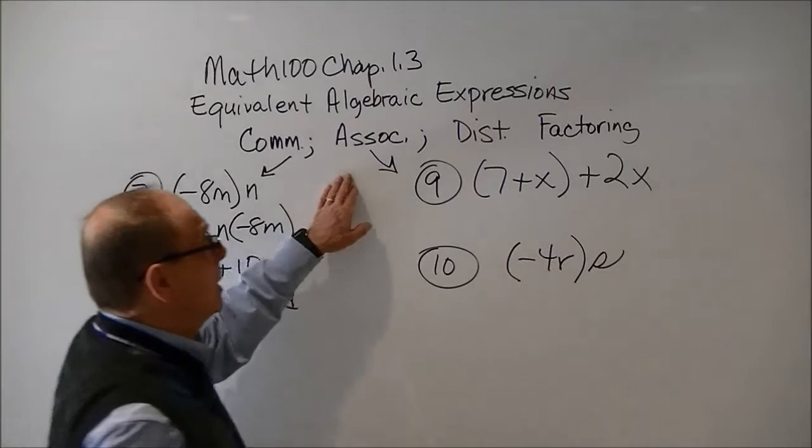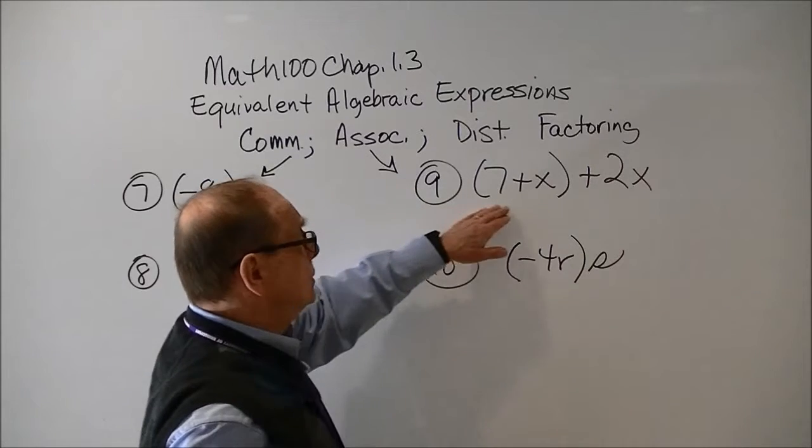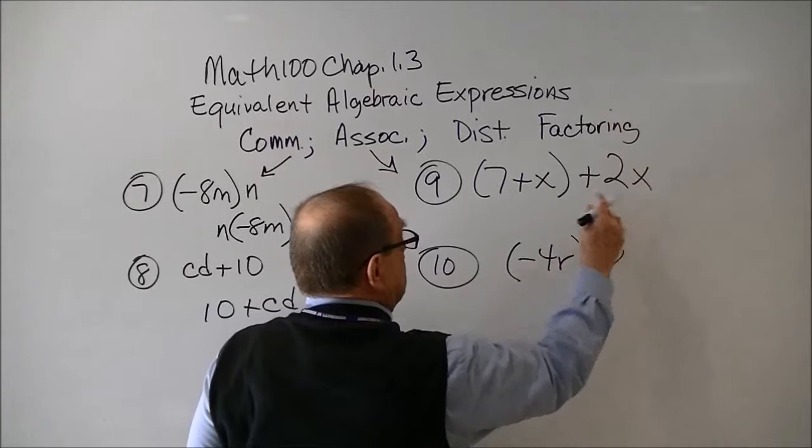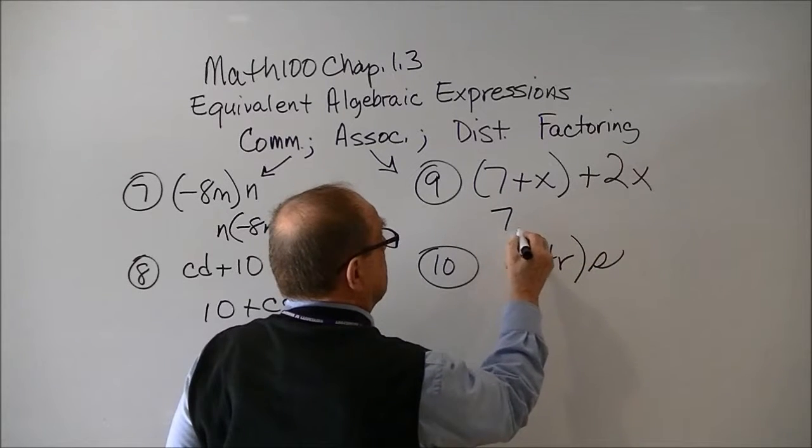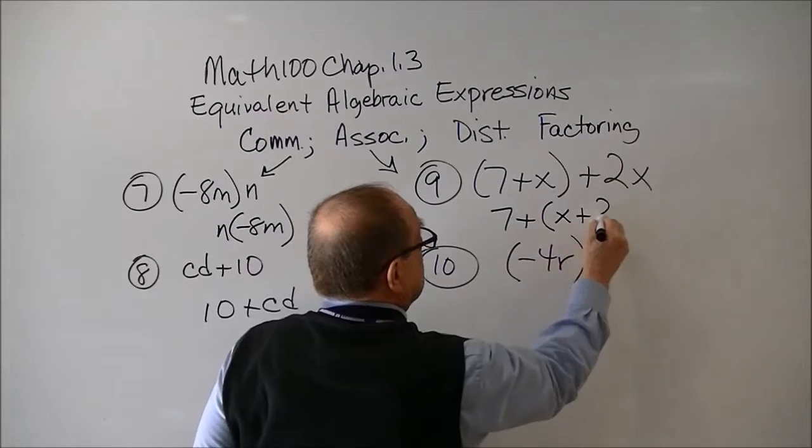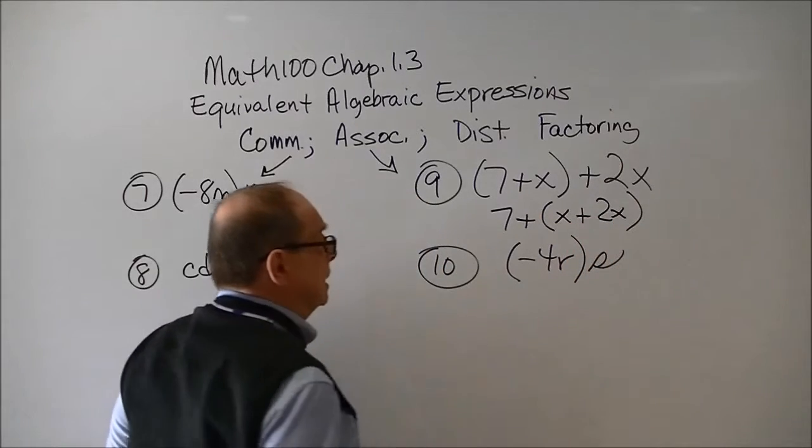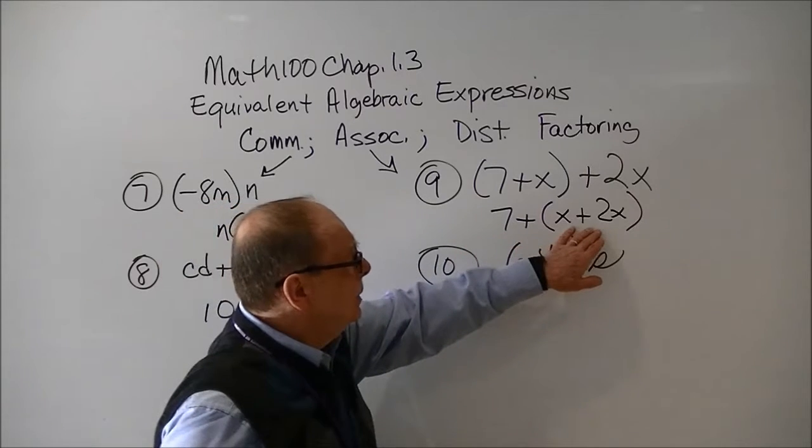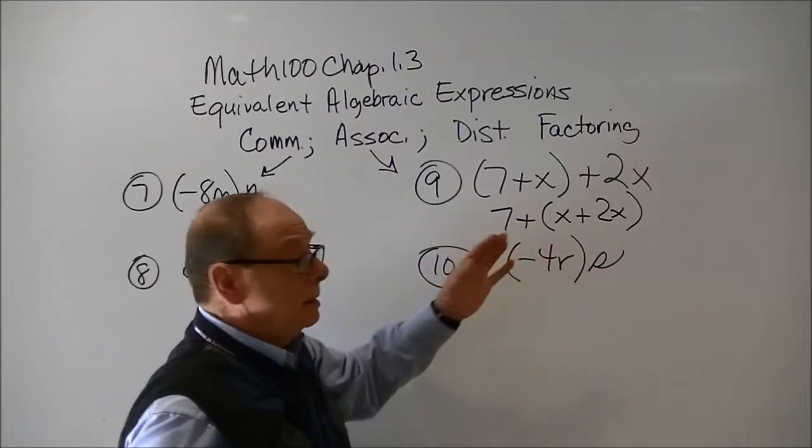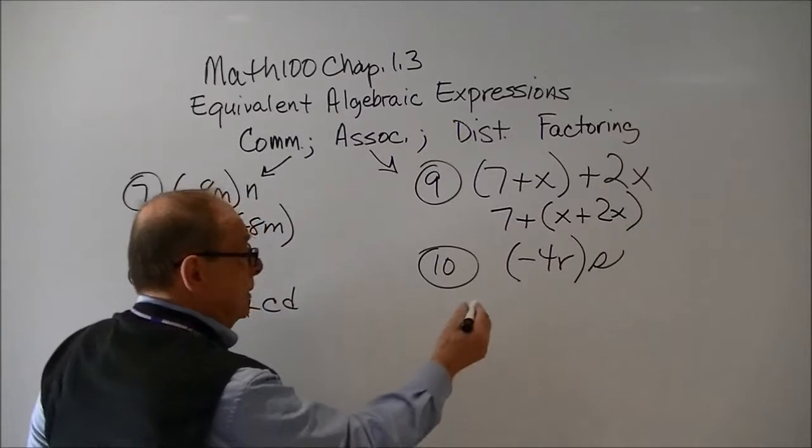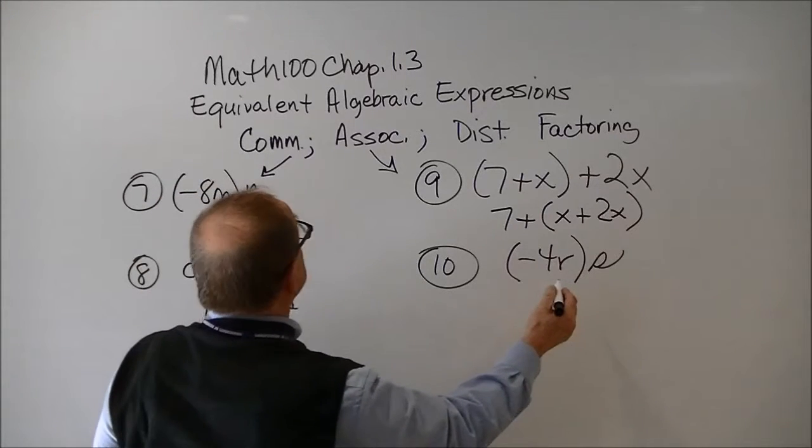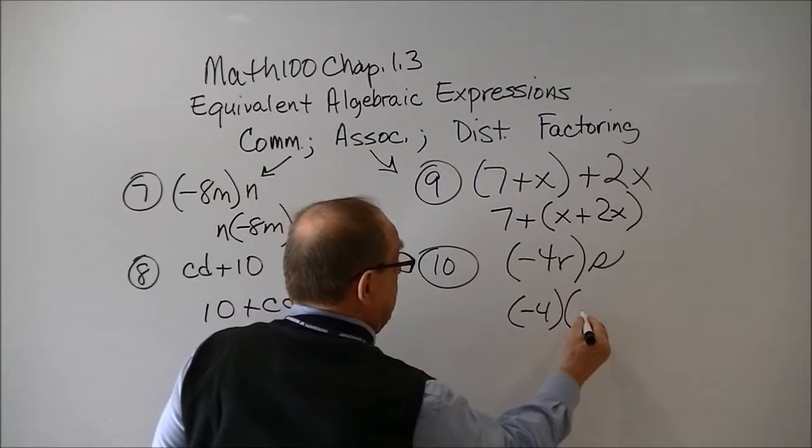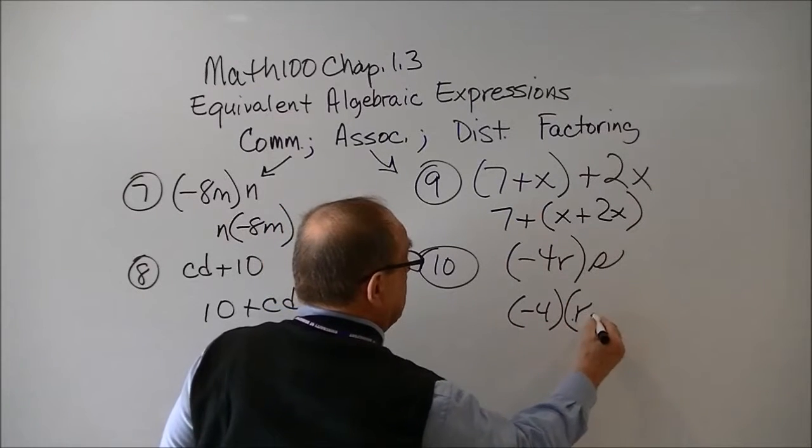Now here, they want us to use the associative principle. So we want to keep the same order. We're going to go 7 plus x plus 2x. So we'd want to do that, kind of do the x's together. And then for this one, the associative would be negative 4, and then rs.